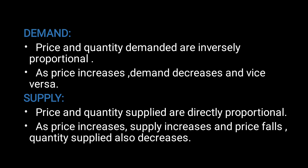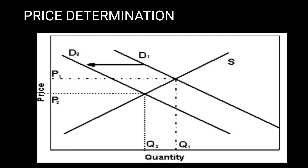Demand: price and quantity demanded are inversely proportional — as price increases, demand decreases, and vice versa. Supply: price and quantity supplied are directly proportional — as price increases, supply increases, and as price falls, quantity supplied also decreases. This graph shows the price determination between price and the quantity of a commodity. By this we can conclude our discussion of the simple market model and price determination. Thank you.